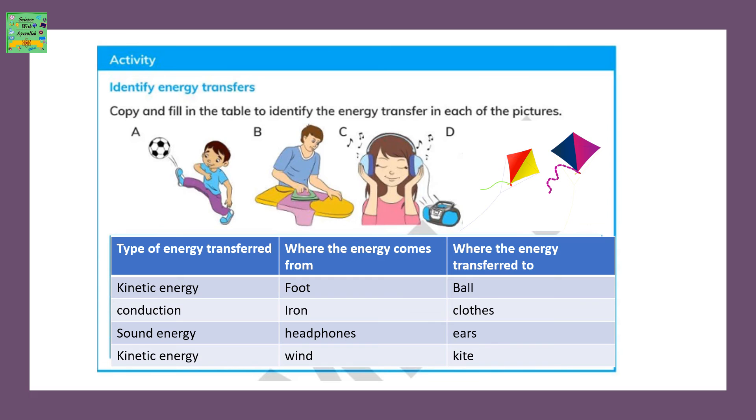Type of energy transferred: kinetic energy, conduction, sound energy, kinetic energy. Where the energy comes from: foot, iron, headphones, wind. Where the energy transferred to: ball, clothes, ears, kite.